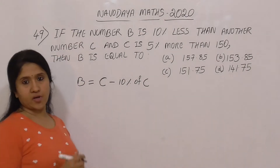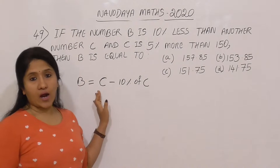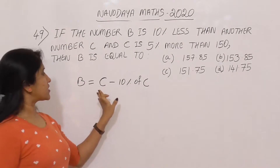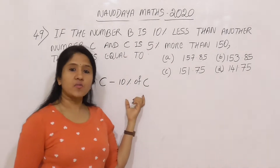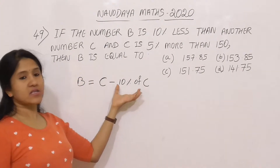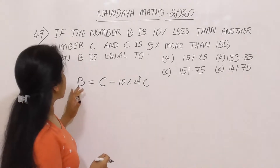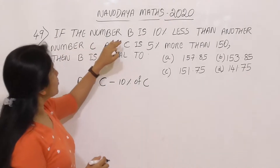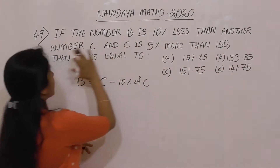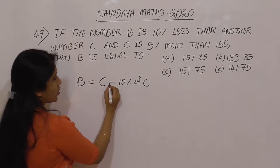For example, if C is 100, then 10% of 100 is 10. So 100 minus 10 equals 90. That means B is 90. So if C is 100 and B is 10% less than C, B equals 90. This is what the first line means.